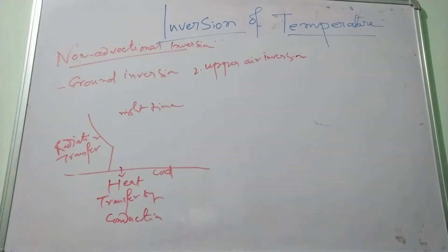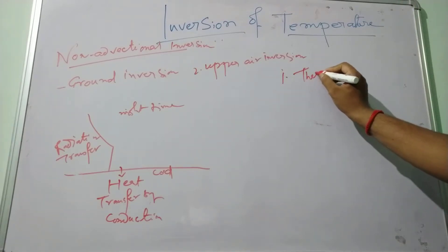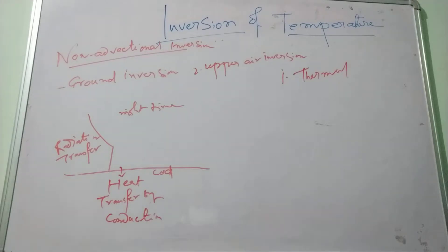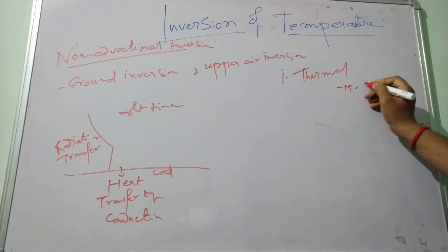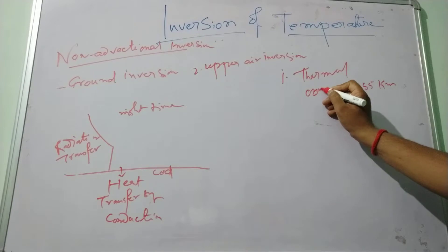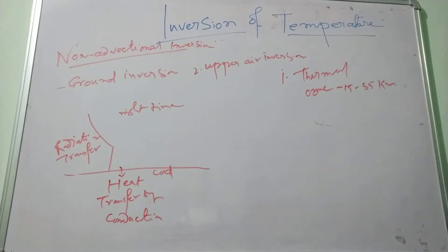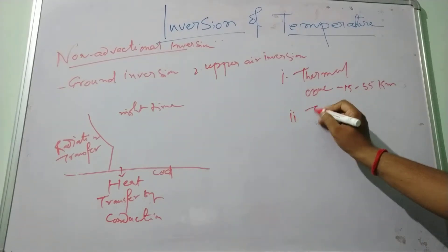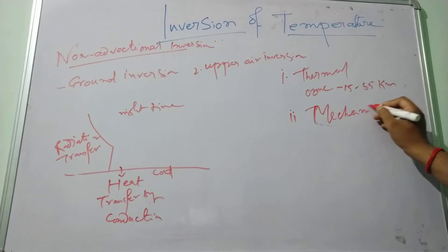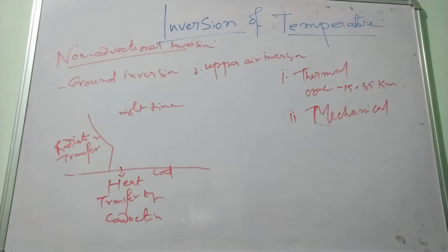Upper air inversion is developed when there is a widespread layer of the adjacent air. There are two types: thermal upper air inversion and mechanical upper air inversion. Thermal upper air inversion is caused by the presence of the ozone layer in the upper troposphere, between heights of 15 to 35 kilometers, which absorbs radiation and increases the temperature in the upper atmosphere. The mechanical upper air inversion is caused at higher altitudes due to the subsidence of air and turbulence and convection mechanisms.